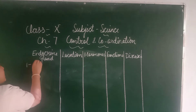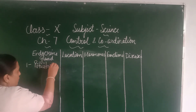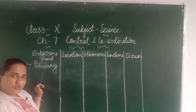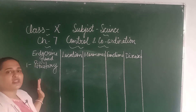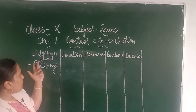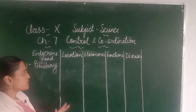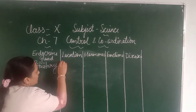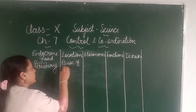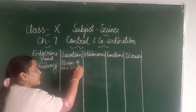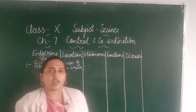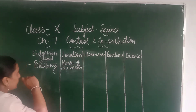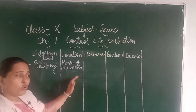The first endocrine gland is the pituitary gland. Its location is at the base of the brain. It is also called the master gland because it controls the activities of all the other glands — it controls the functioning of all the other endocrine glands in the body.